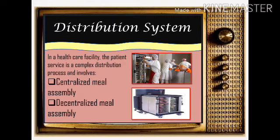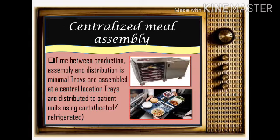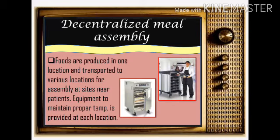This slide determines how food is distributed in terms of health care facilities. First is centralized meal assembly and second is decentralized meal assembly. Centralized meal assembly involves time between production, assembly, and distribution — food is placed on trays so patients don't need to leave their beds, using heated and refrigerated trays to keep food hot and healthy upon delivery. Decentralized meal assembly means foods are produced in one location and transported to various locations, using equipment to maintain proper temperature.